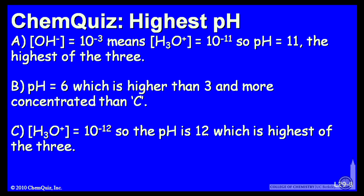Let's look at a possible explanation for each answer. A, OH minus is 10 to the minus 3, means H3O plus is 10 to the minus 11th. So the pH is 11, the highest of the 3.